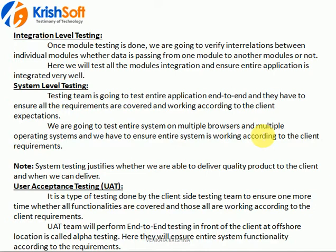The UAT team identifies wherever user friendliness is missing and sends feedback to the development team to fix it. After fixes, we perform all levels of testing again, including system testing, and send it back to the UAT team. This process continues until they are satisfied.